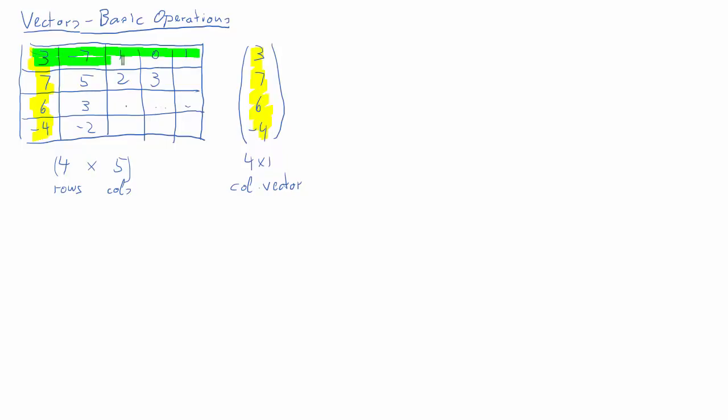But we may also be interested in a row. So here we have this row with elements three negative seven one zero and one. This is a one by five vector. It has one row and five columns and we call it a row vector.